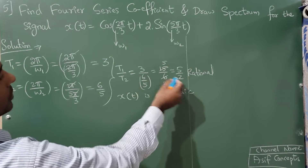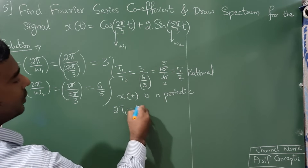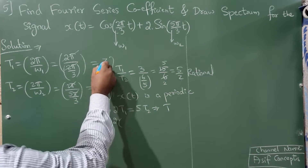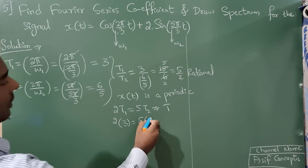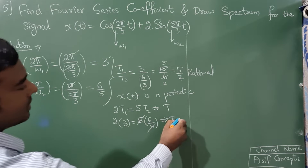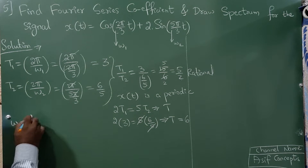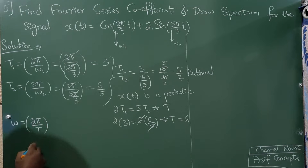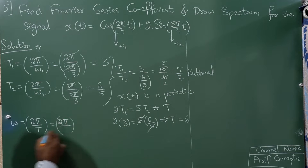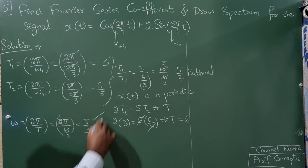Cross-multiplying: 2·T1 = 5·T2 = T. So T = 2·T1 = 2×3 = 6, and also T = 5·T2 = 5×(6/5) = 6. The fundamental period T = 6. Therefore, the fundamental frequency ω₀ = 2π/T = 2π/6 = π/3.